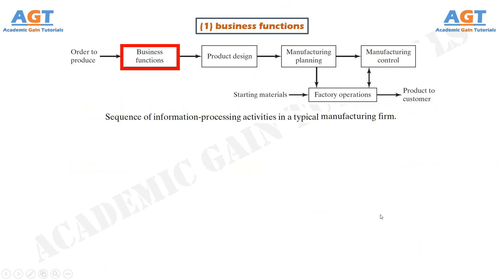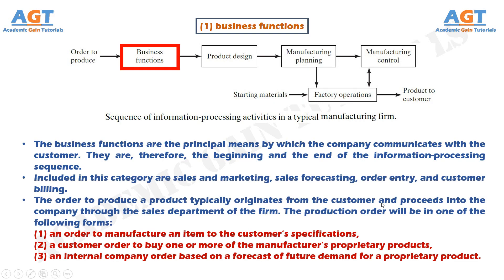Business functions are the principal means by which the company communicates with the customer — they are the beginning and end of the information processing sequence. Included in this category are sales and marketing, sales forecasting, order entry, and customer billing. The order to produce a product typically originates from the customer through the sales department, and the production order will be in one of three forms: an order to manufacture to the customer's specifications; a customer order for the manufacturer's proprietary products; or an internal company order based on a forecast of future demand.